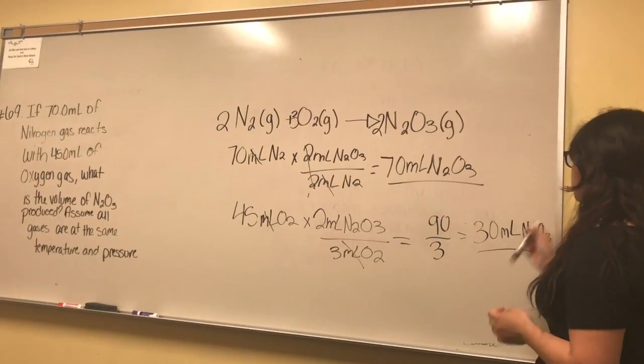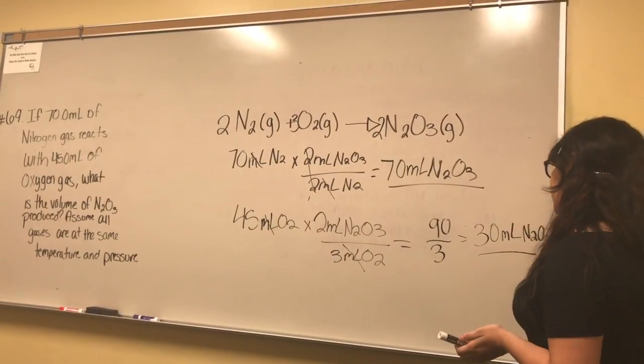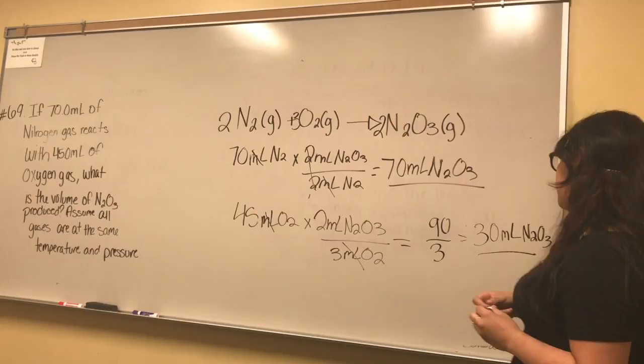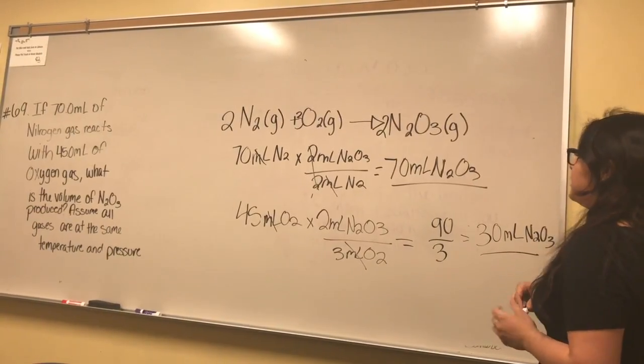After comparing the two results, it's clear that oxygen is the limiting reactant. Therefore, only 30 milliliters of N2O3 can be produced.